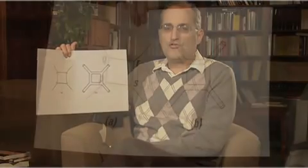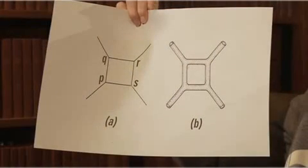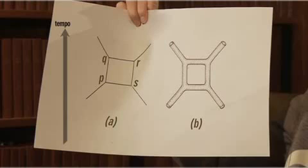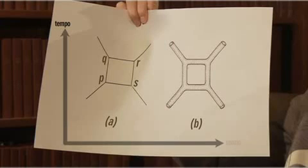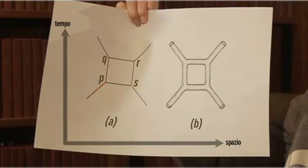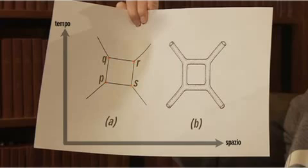You should understand this picture as describing the motion of particles in space and time. Time is going vertically and space runs horizontally. This diagonal line and this one describe the motion of particles that come in from the past, then go out to the future. And in between, there are some processes at space-time events labeled P, Q, R, and S, where the particles branch or rejoin.